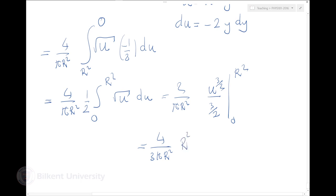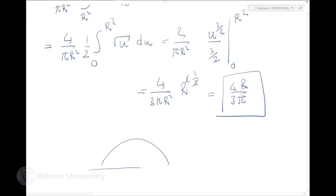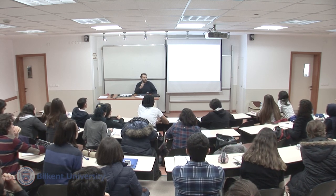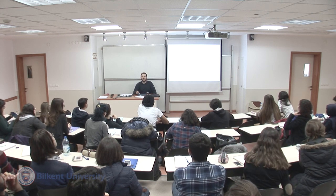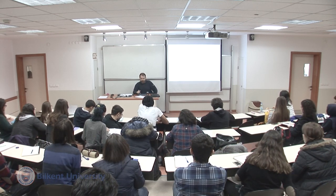So y center of mass = (4/(π·R²))·(R³/3) = 4R/(3π). The y coordinate of the center of mass of a semicircle is 4R/(3π) from the origin. This is a non-trivial result — not one third, not one sixth — it's something you couldn't just make up. It's good that we've actually found it through calculation.